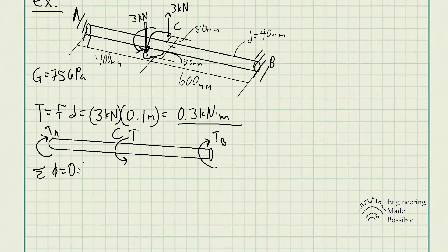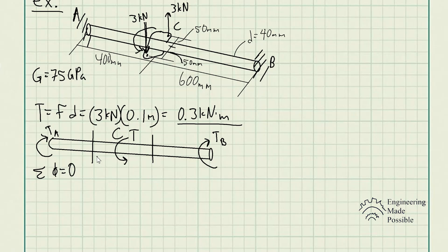When applying the sum of angle of twist, it's important to determine which torque to use in each segment. We split the shaft into two portions: A to C and B to C. Cutting the shaft at segment A to C and drawing the free body diagram from point A to the cut, we find the internal torque is T_A. For static equilibrium, the internal torque at the cut face is equal and opposite to T_A, so it acts counterclockwise.